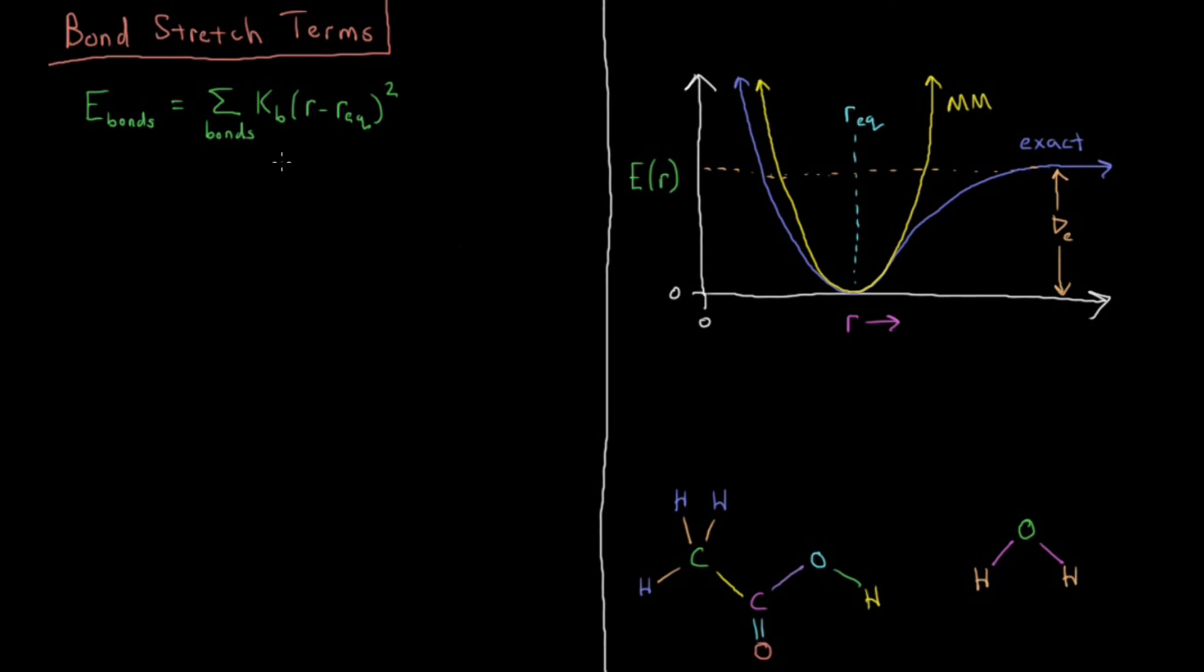This is pretty similar to the term that you would see for a harmonic oscillator in quantum mechanics, which are in fact modeling the same thing. The difference would be that instead of K_B here in harmonic oscillator you had one half K. So it's a very similar type of thing except they're absorbing the one half into this K_B here.